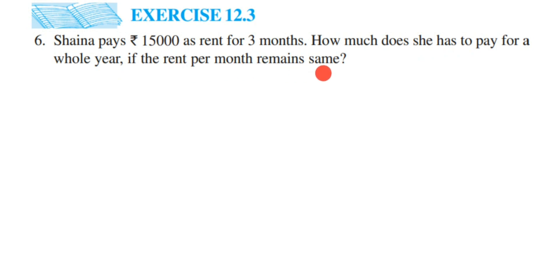So here they're asking how much money she is paying for the whole year, that is 12 months. She has paid 15,000 for three months. To get the answer for 12 months, we should know the rent for one month.